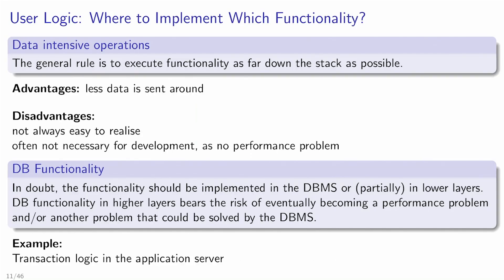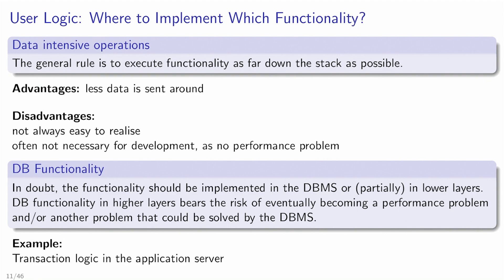In general, for data-intensive operations, implement user logic as far down the stack as possible. The advantages are less data sent around, though it's not always easy to realize and often not necessary if there's no performance problem. For database functionality: if in doubt, consider implementing it in the DBMS. If you see application code that looks like a group-by or a join, delegate it to the database system — then you're in the space where the database system can optimize, and you don't have to worry about access times.